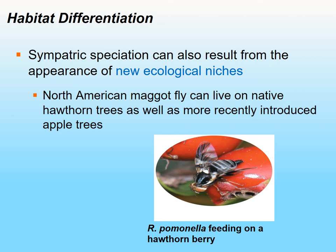Habitat differentiation: speciation within the same area can result from new niches in the ecology of that area. The example here is the apple maggot fly — the North American maggot fly originally preferred to live on hawthorn trees native to North America. Apple trees were later introduced, and some flies preferred to lay their eggs on the apple trees. Now we have two different separate habitats — this is habitat differentiation, where one population split because a new habitat was introduced.